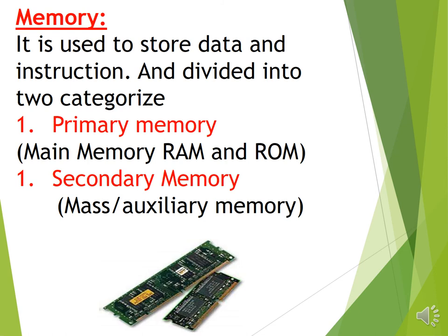Memory is used to store data and instructions and is divided into two categories. Basically there are two types of memory: primary memory and secondary memory. Primary memory and secondary memory are different.